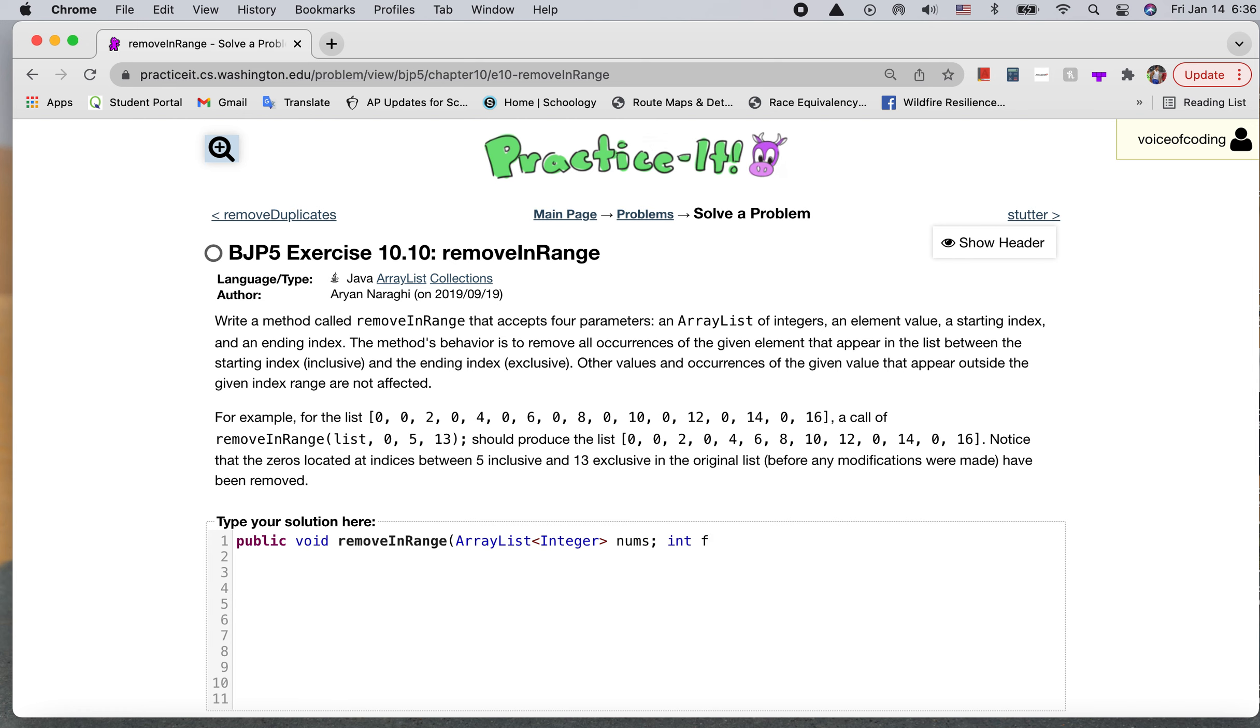Then the second one, this is the element value that we're going to be removing, so I'm calling it int f. Let me add commas. This is int f, then our start index, we're going to call it a, and then our end index z.